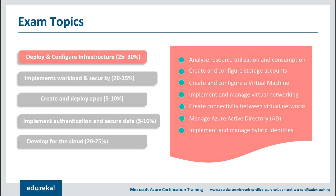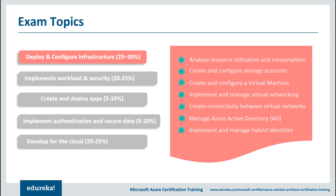For deploy and configure infrastructure — the highest-importance task — you need to know how to analyze resource utilization and consumption, configure settings and create baselines for resources, create alerts, analyze alerts across subscriptions, and analyze metrics. You should also know how to create and configure storage accounts, create and configure virtual machines for Windows and Linux, automate VM deployment, implement and manage virtual networks, create connectivity between virtual networks, manage Azure Active Directory, and implement hybrid identities in Azure.